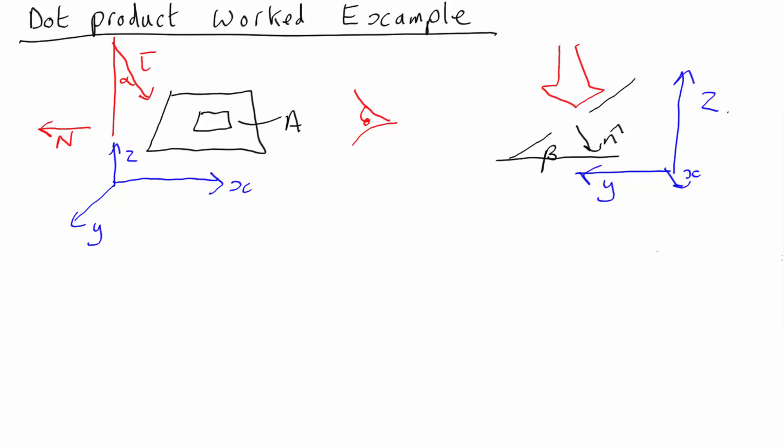So what is the intensity vector? The intensity vector is going to be the numerical value, or the magnitude of the intensity, so mod i times, well, it's going to have x, y and z components. So if that angle there is alpha, the x component is going to be sine alpha.